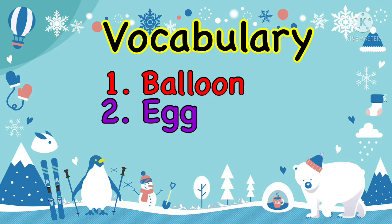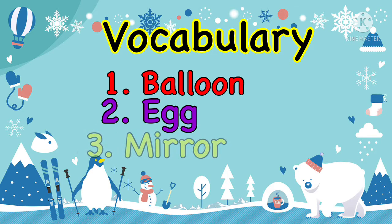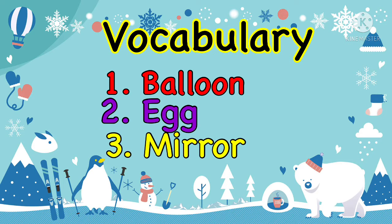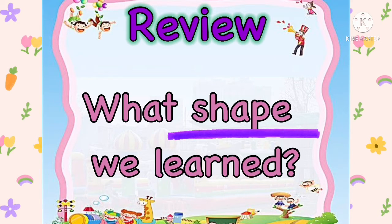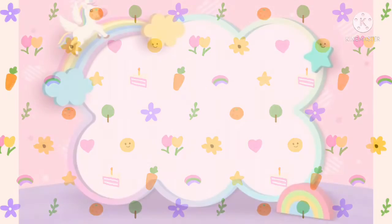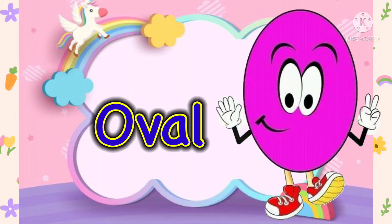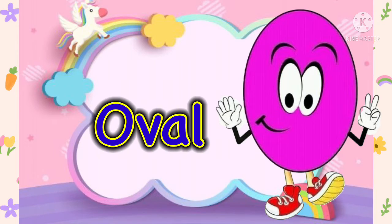Great job. Number three, repeat after me: mirror. Mirror. Great job, everybody. Before we start our lesson, let's review what shape we learned yesterday. Do you still remember? It is about the oval. Oval. Let us spell the word oval: O-V-A-L. Oval.